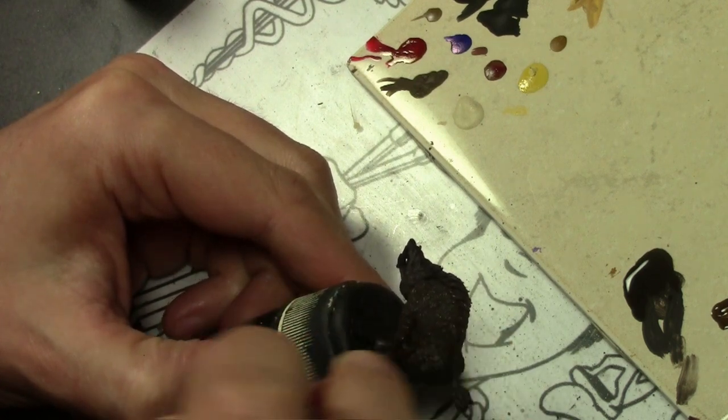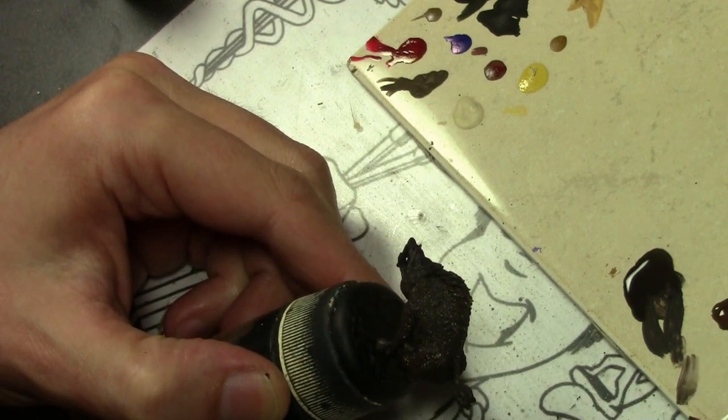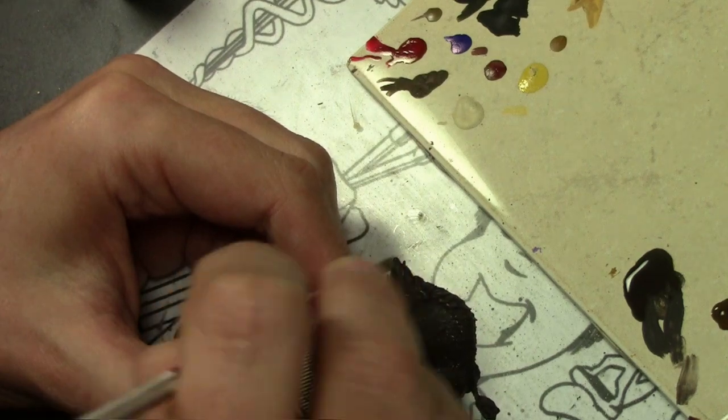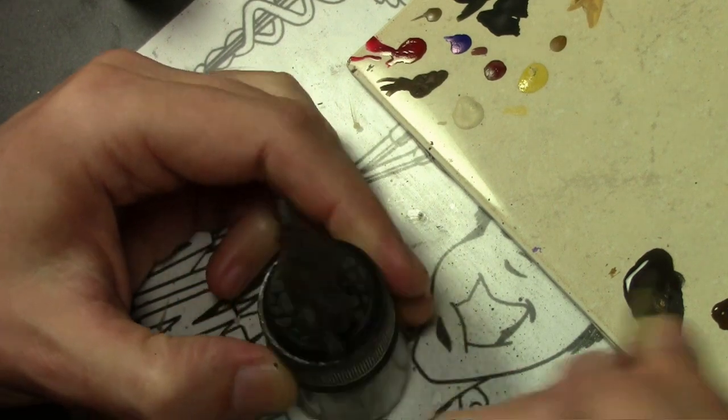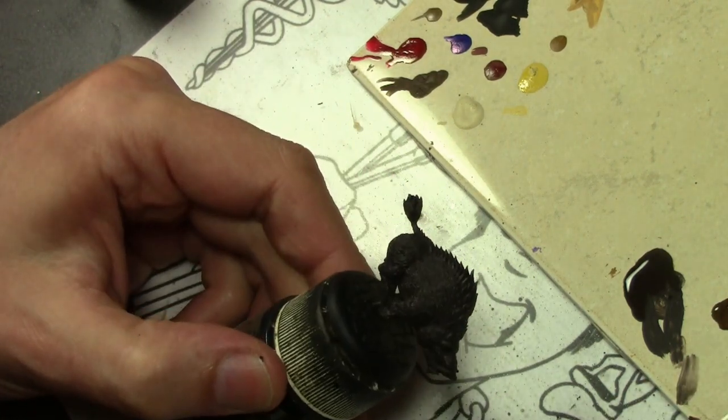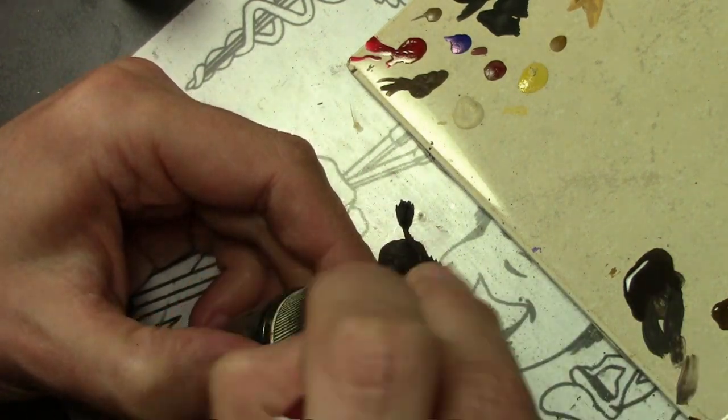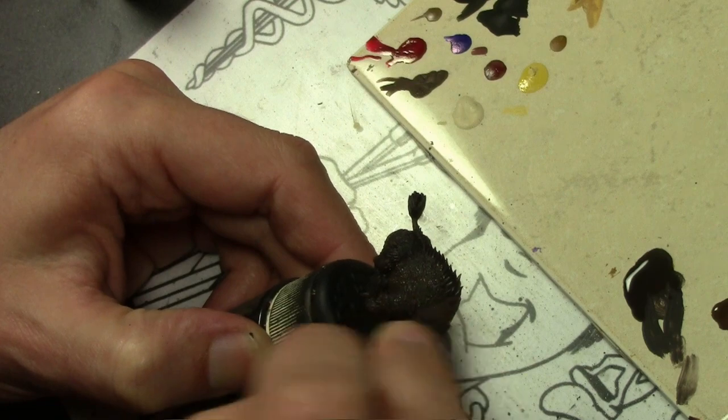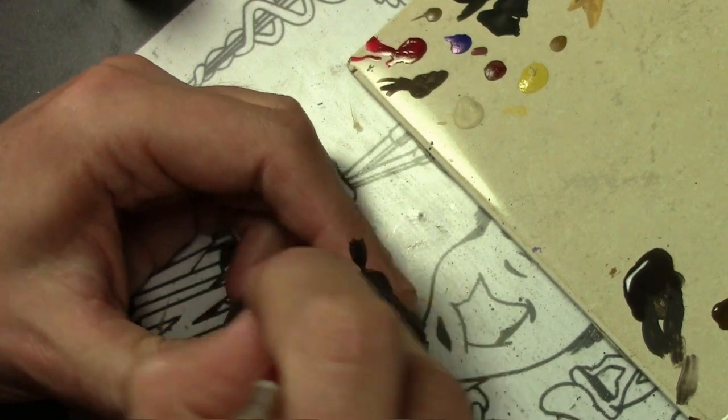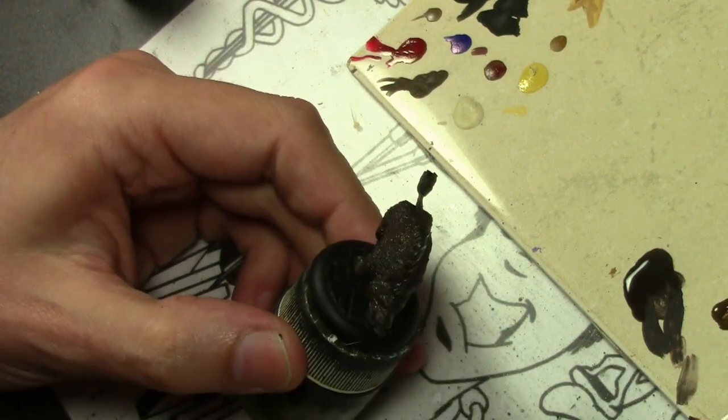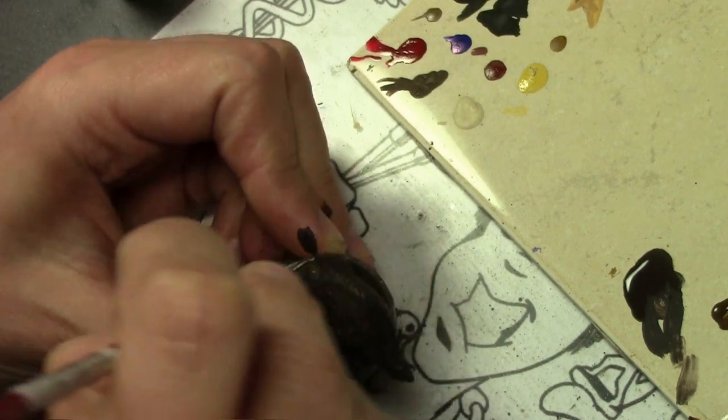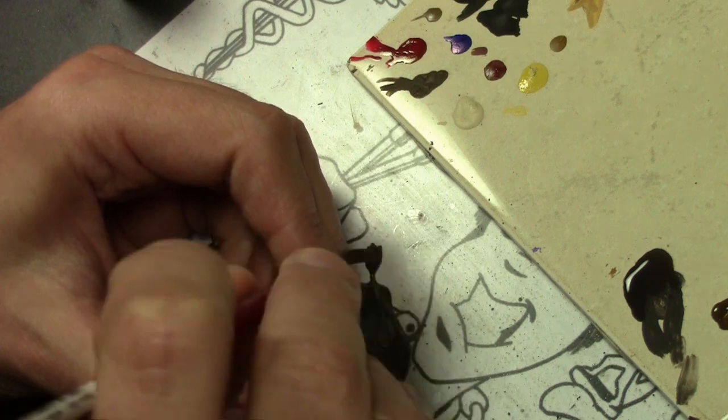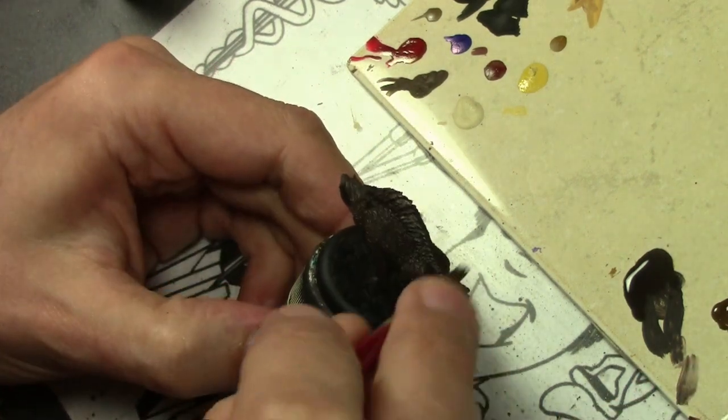Our next color is Vallejo Model Color Burnt Umber and as we go through this, you'll see a change in the way the dry brushing happens. As you begin, you can be very heavy with the dry brush, almost more of a scrubbing motion like you're scrubbing dried food off a pan. But as we get into later stages, the brush work is a lot lighter, slower, a bit more cautious.